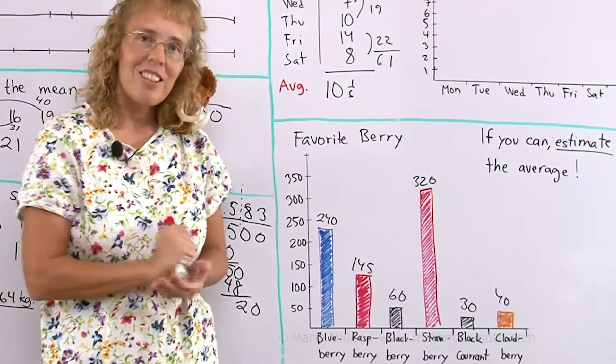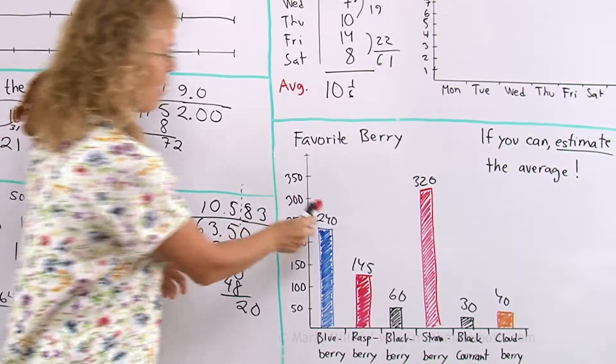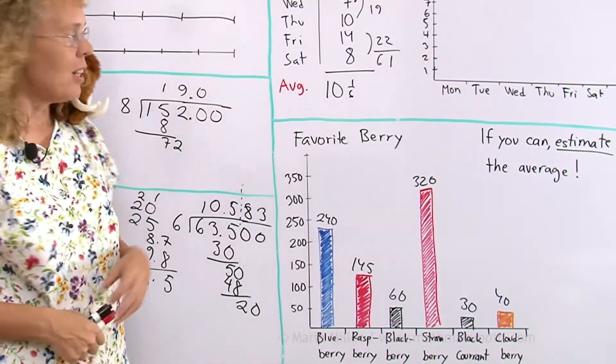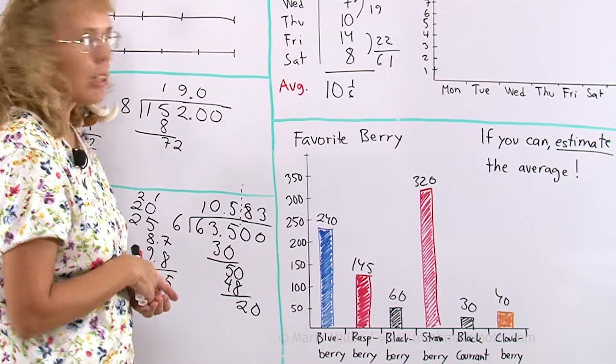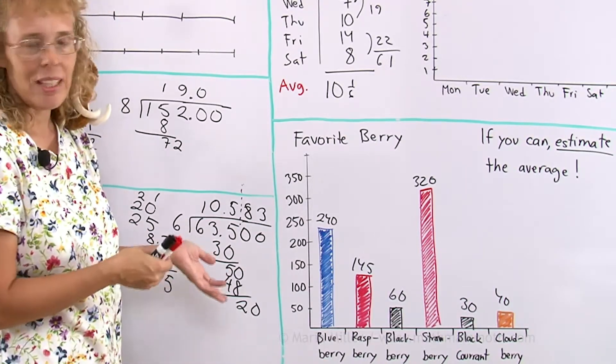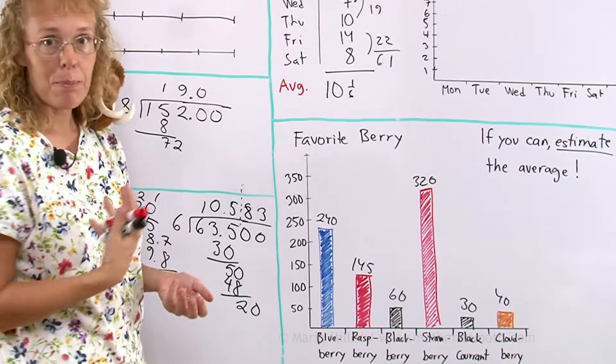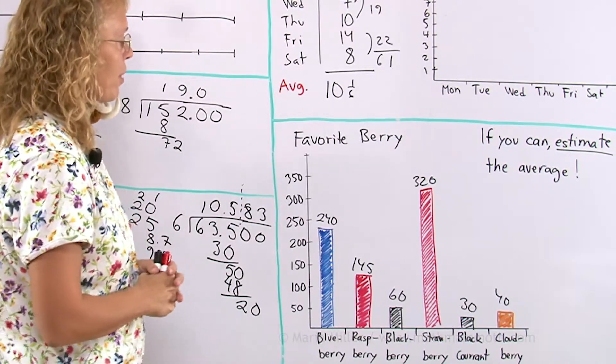The answer is no. You cannot calculate the average even though there are numbers here. You can't just go adding them. If you add those numbers and then you divide it, you'll get a number. But what does it mean in the context of a favorite berry? You see? We need to think back.